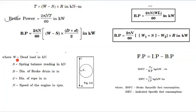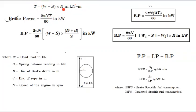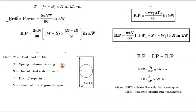The unit is kilonewton meters. The torque equation is T equals W minus S multiplied by R, where W minus S is the net force and R is the radius, giving units of kilonewton meters. The torque T is the direct torque in kilonewton meters.